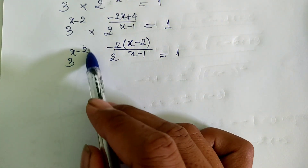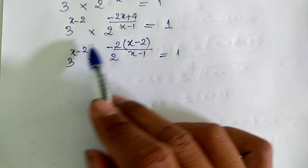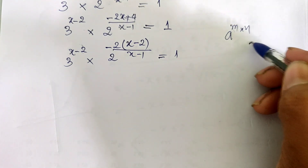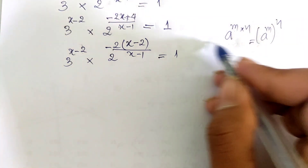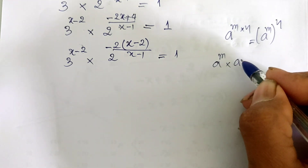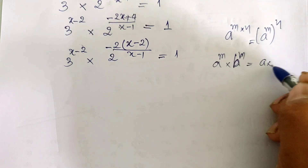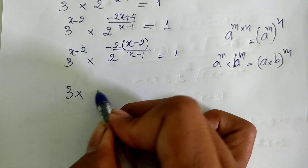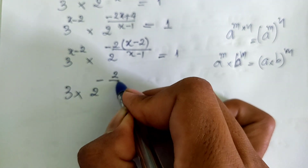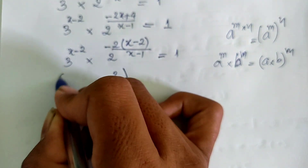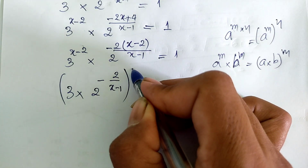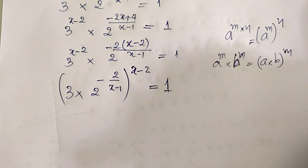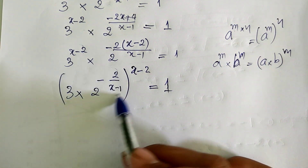Now we have x minus 2 in both exponents. We use the rule: a power m multiplied by b power m equals a multiplied by b, all to the power m. So we take 3 multiplied by 2 power minus 2, divided by x minus 1, all to the power x minus 2, equals 1. For this to equal 1, either the exponent x minus 2 equals 0, giving x equals 2.